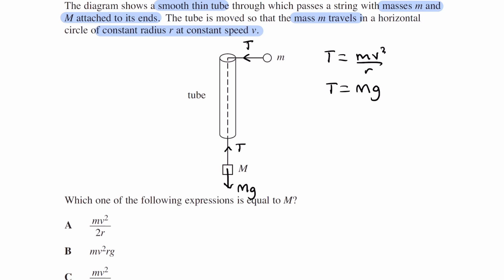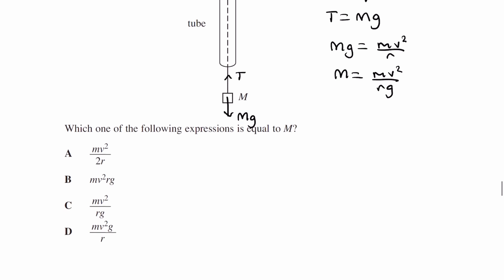We can then equate the two things. Mg is equal to mv squared over r. And we're trying to work out capital M, so capital M will then be mv squared over rg, which is C.